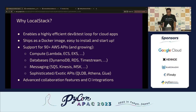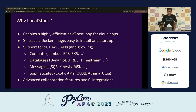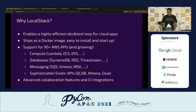LocalStack enables a highly efficient dev and test loop. For example, creating an EKS cluster on AWS using Pulumi takes about 10 to 15 minutes; on LocalStack, it takes around a minute and 30 seconds. It ships as a Docker image, so all you need is Docker — optionally with a CLI. We support over 90-plus AWS APIs, including compute, databases, messaging, and more exotic APIs, plus collaboration features I'll discuss later.